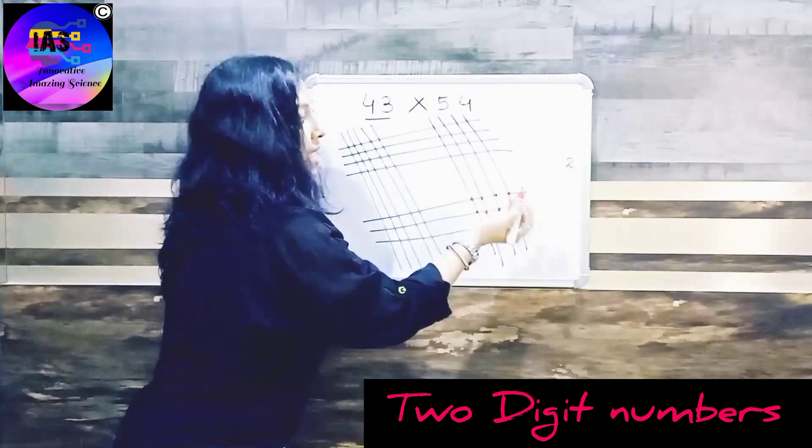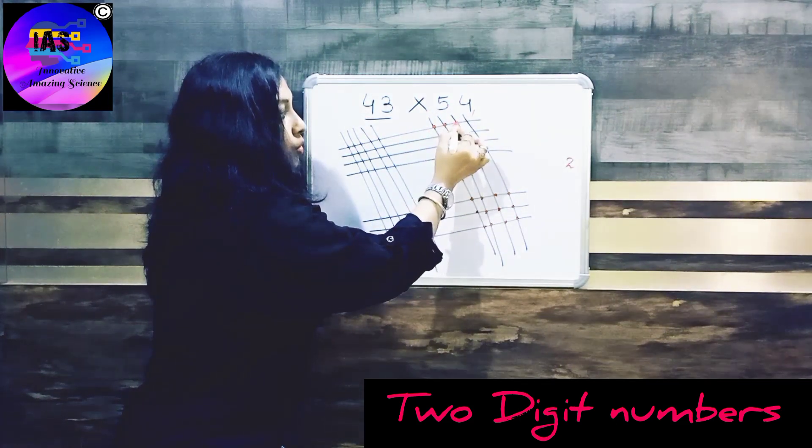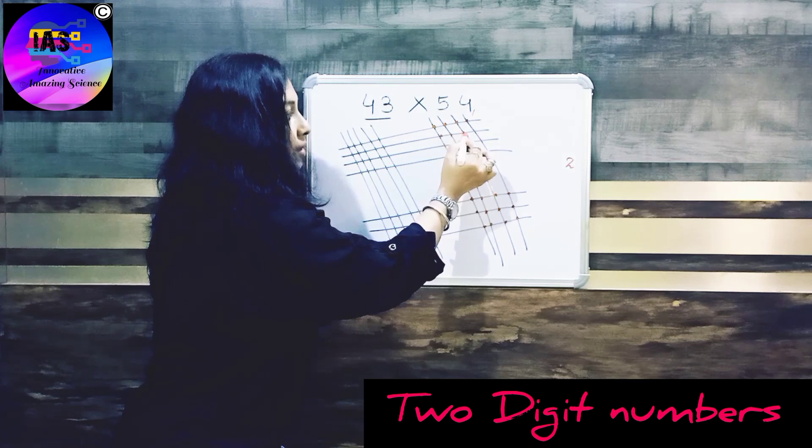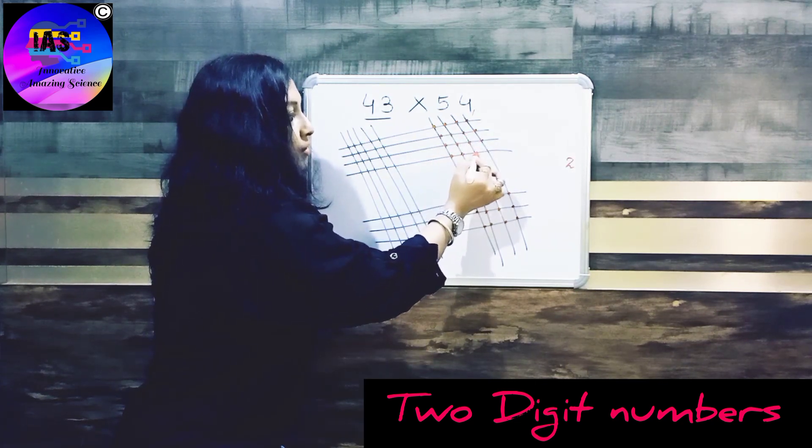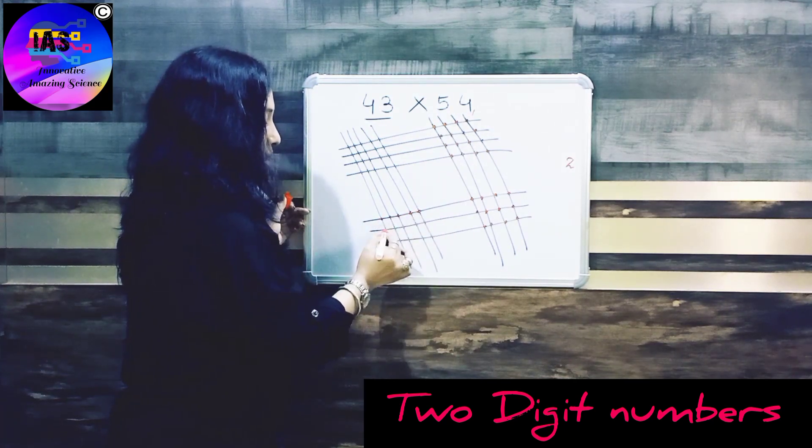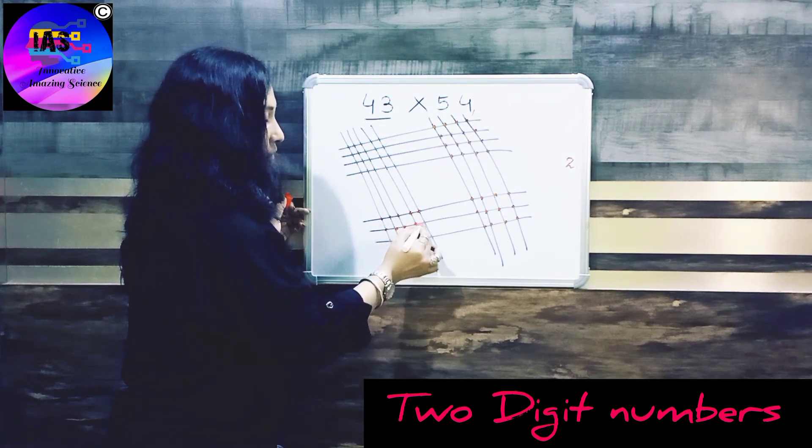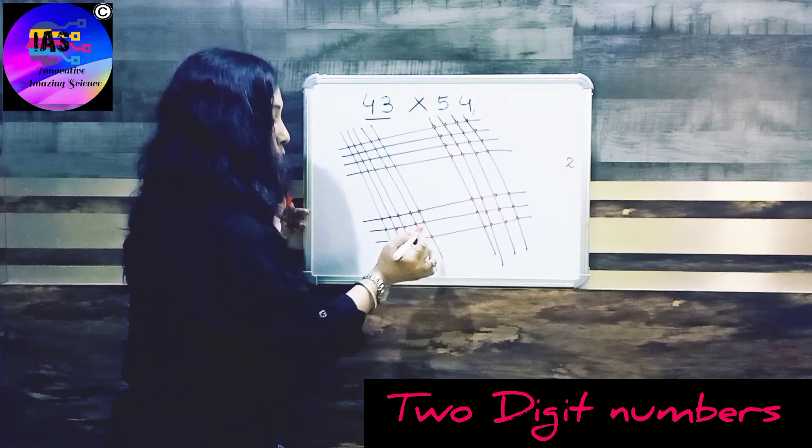And counting: one, two, three... twenty-nine, thirty, thirty-one. So if you multiply 43 into 54, this plus 1...